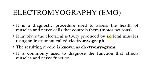EMG involves the electrical activity produced by skeletal muscles using an instrument called an electromyograph, and the resulting record is known as an electromyogram. The record is also called a myogram and the recording instrument is called a myograph, similar to the EMG naming convention. It is commonly used to diagnose conditions that affect muscle and nerve function.